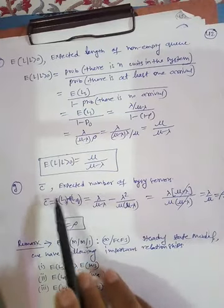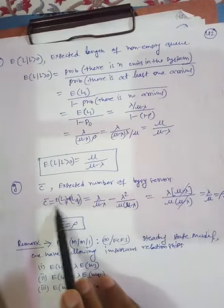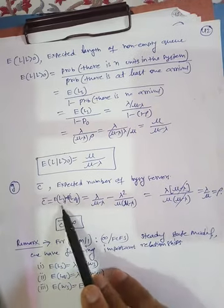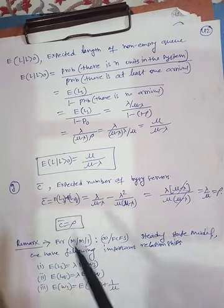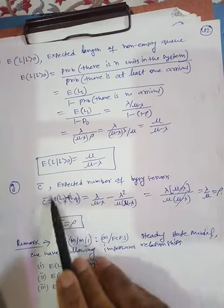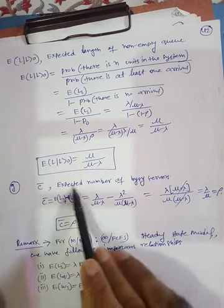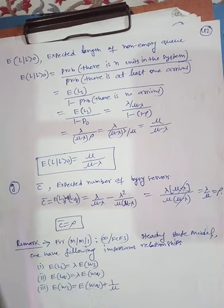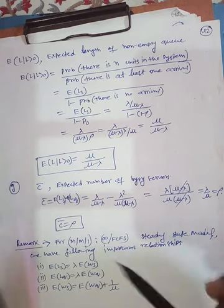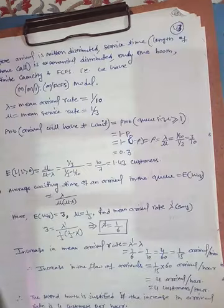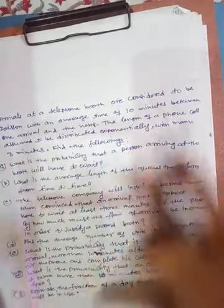The last parameter is C-bar — expected number of busy servers — given by C-bar = ELS − ELQ, i.e., total customers in system minus those in queue. This difference equals ρ, so C-bar = ρ. That means the expected number of busy servers equals the traffic intensity. These relationships are known as Little's formulae. This completes the analysis of Model 1. The example for this model will be covered in the next video. Thank you.